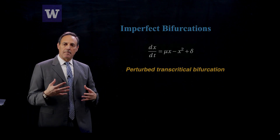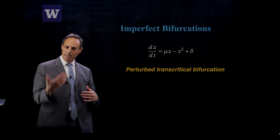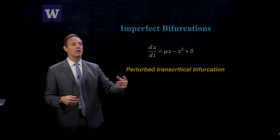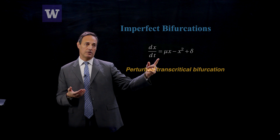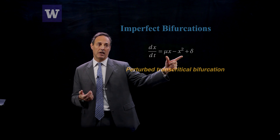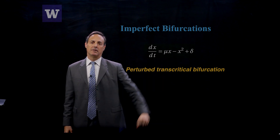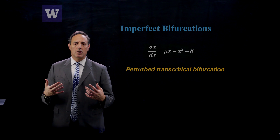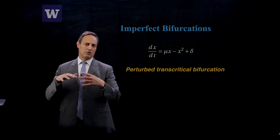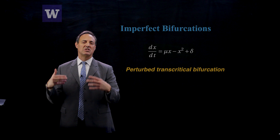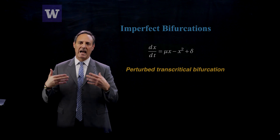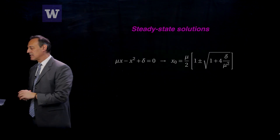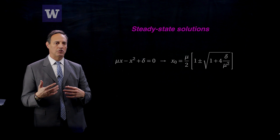The only other concept I want to bring to your attention is imperfect bifurcations. What happens if I actually perturb these forms of a solution? Here's a transcritical bifurcation, but now I've added a little bit of plus delta — I've perturbed the normal form. The question is, does that transcritical bifurcation persist even as I perturb the actual structure of this equation? You can perturb this and it will, in fact, break the bifurcation structure.